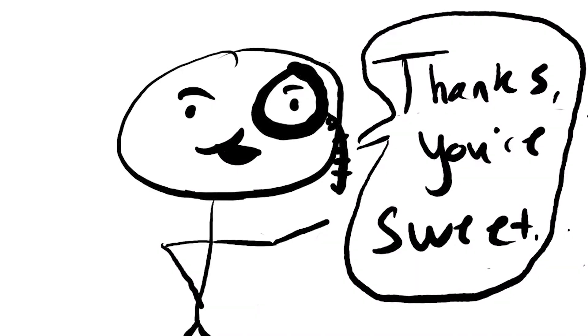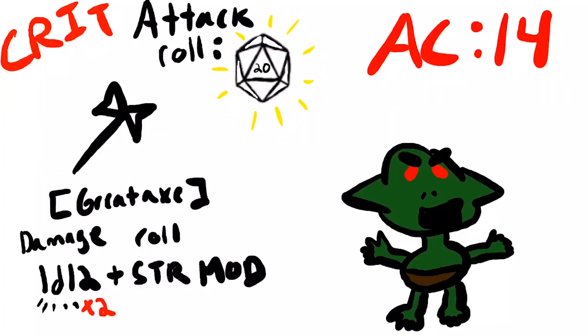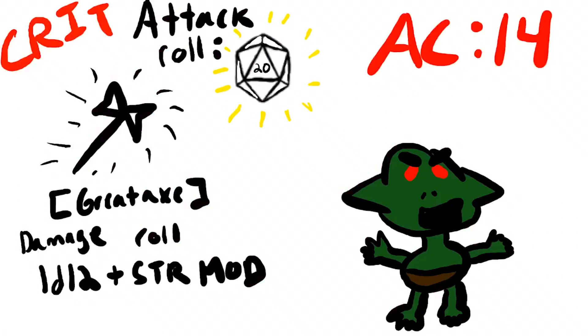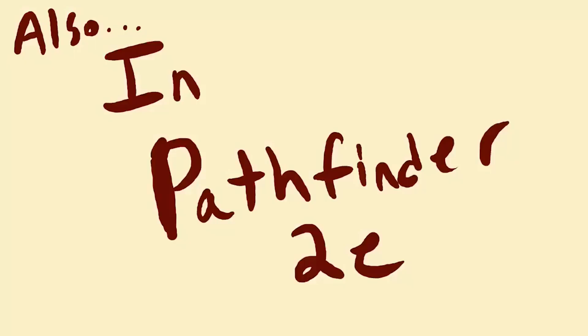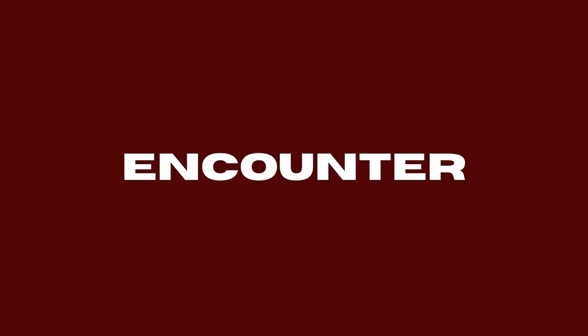Critical hit. When you roll a natural 20 on the d20 for an attack roll, you get a critical hit. Depending on the system: in D&D 5e, the number of damage dice you roll is doubled. In Pathfinder 2e, you double the damage dice and the included modifiers. Notably in Pathfinder 2e, critical hits happen not only on natural 20s but any time your attack roll meets or beats 10 plus the AC of your enemy.